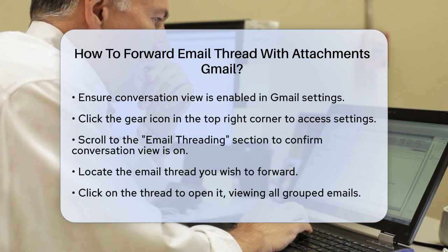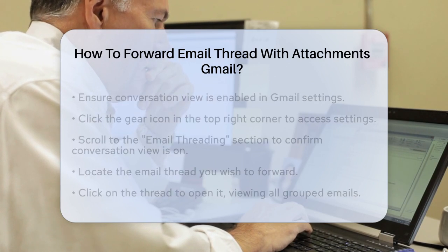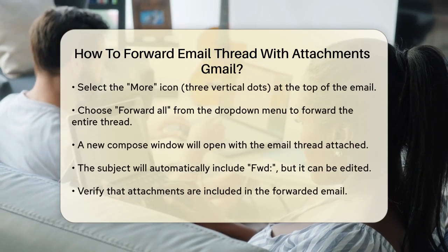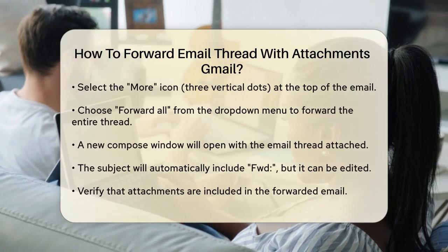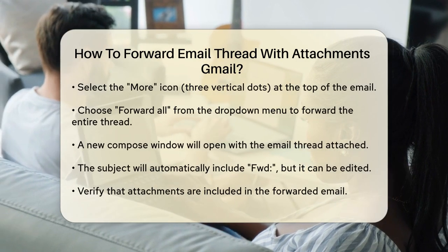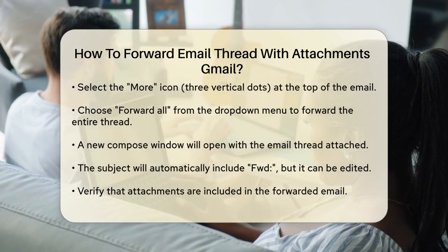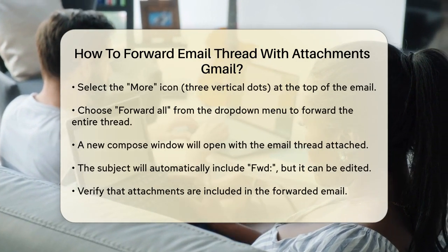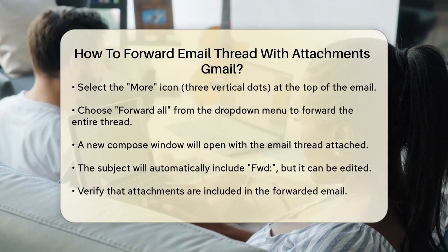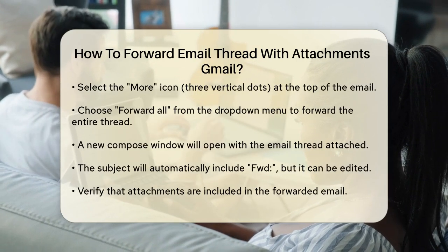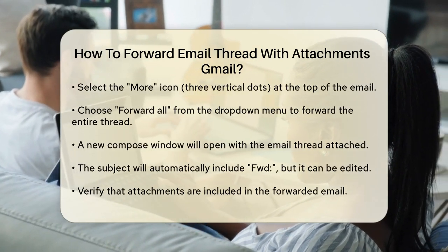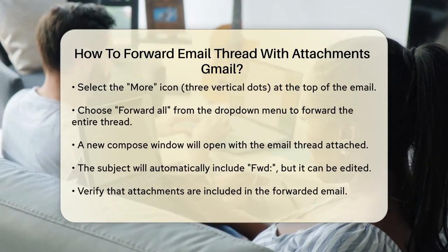Now you need to select the entire thread to forward it. Click on the More icon, which is usually represented by three vertical dots at the top of the email. From the drop-down menu, select Forward All. This will open a new compose window with the entire email thread attached.